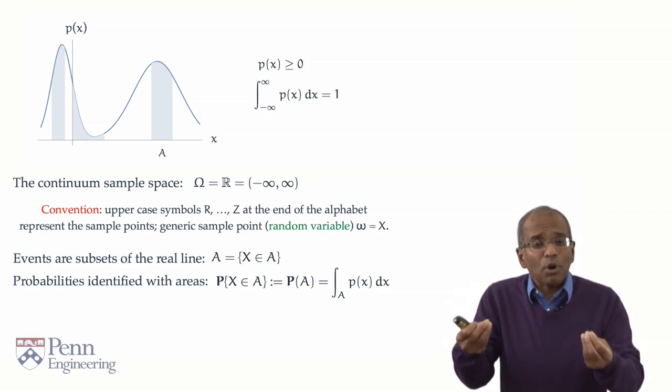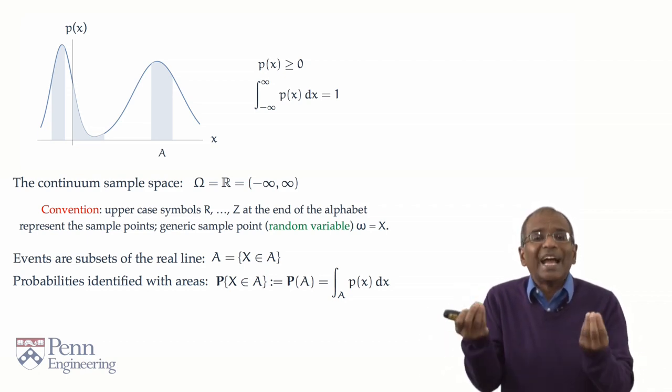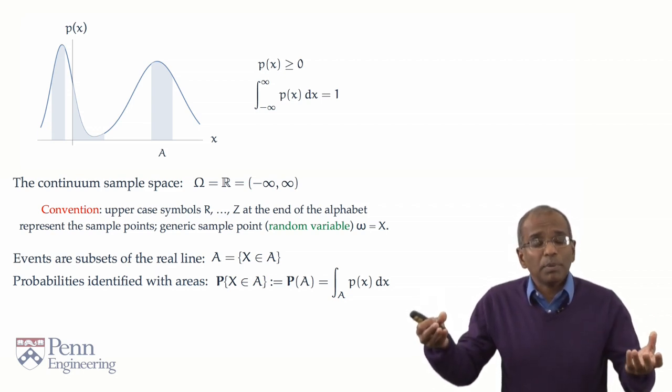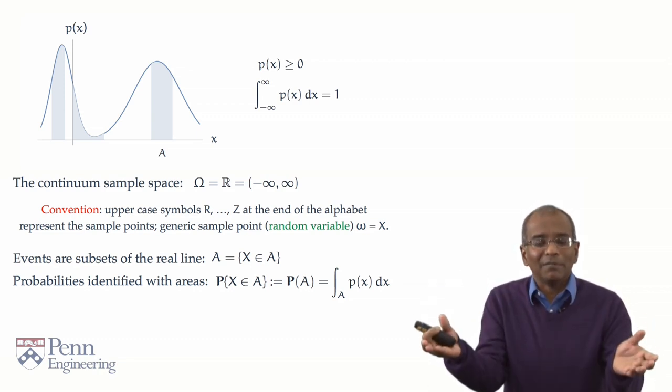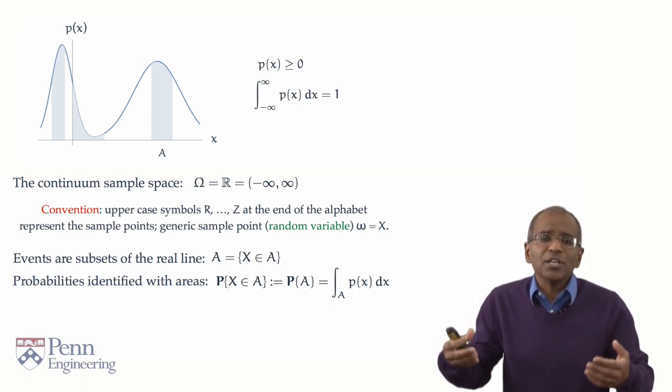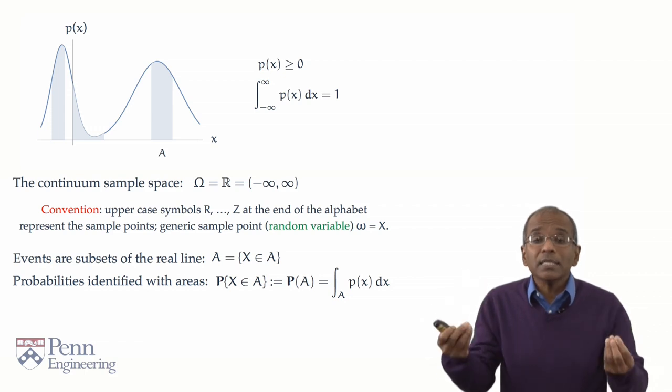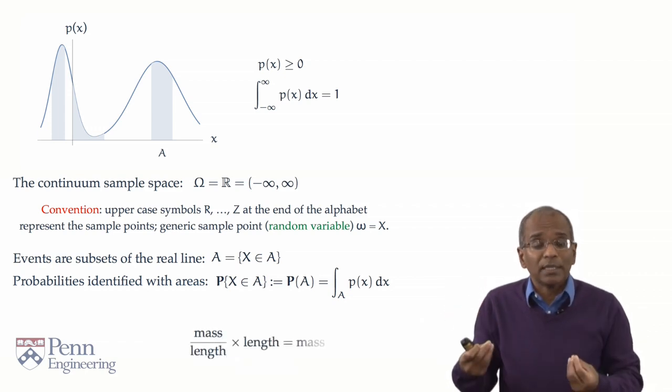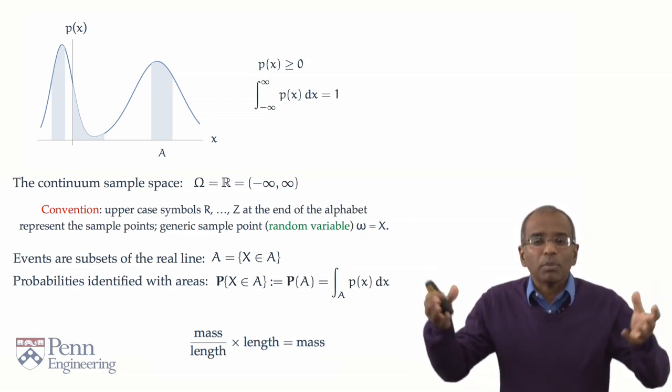We're interested in the probability that your random variable, a chance outcome, lands in the set A. And how do we compute the probability? Simply by stitching together areas under the curve and appealing to additivity. The area under the curve of p of x in the region A is what we denote as the integral over A of p of x. And this exactly gives rise to the probability of interest. And all we've done here is we've taken a density with units of mass per unit length, multiplied by infinitesimal lengths, and added to get a total probability mass.